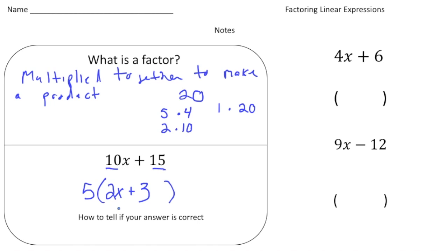Now the way you can tell if it's right or wrong is you can actually use the distributive property, right, to multiply these two expressions. So let's double check it. Let me use a different color here. So 5 times 2x, that's 10x. And then plus 5 times 3, that gives us 15. And guess what? That's our original expression, which is right here.